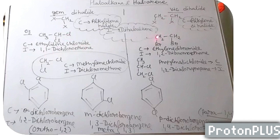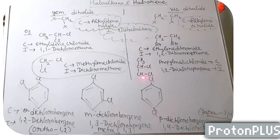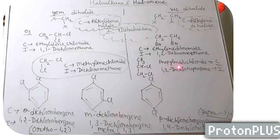Vicinal dihalide: CH2Br-CH2Br — both the bromine atoms are adjacent, so it is a vicinal dihalide. Common name is ethylene dibromide. IUPAC is 1,2-dibromoethane. Similarly, if we take CH3CHCl-CH2Cl — the longest chain is propane, and the two halogen atoms are adjacent to each other. So it is propylidene dichloride, or IUPAC: 1,2-dichloropropane.